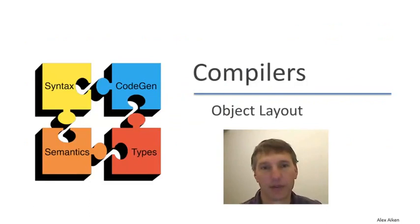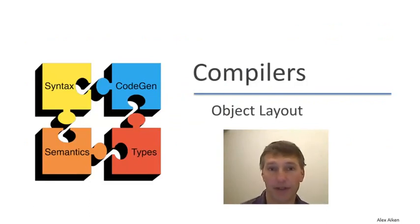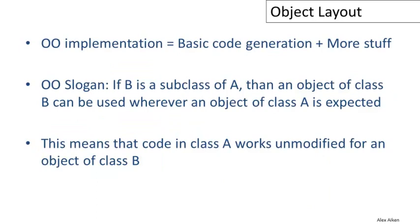In the last several videos we've discussed code generation for a very simple programming language. In this video we're going to take a look at code generation for a more advanced feature: objects. Fortunately, the standard code generation strategy for objects is really just an extension of what we've already learned, so everything we learned before we're going to be using, and then there's going to be some additional things that we do specifically for objects.